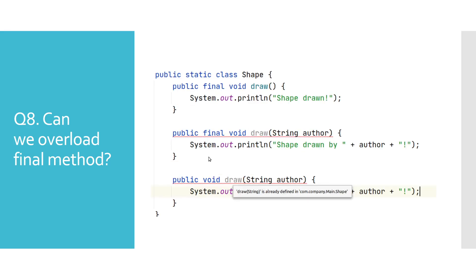If we would have two methods that only differ by the presence of the final keyword, Java would complain. This clearly shows that final is not part of the method signature.